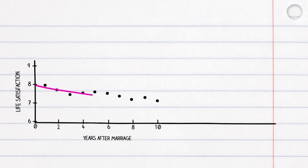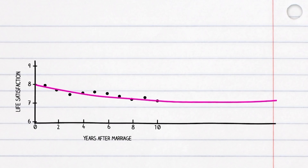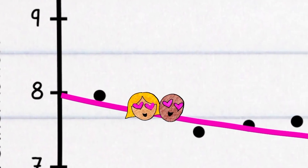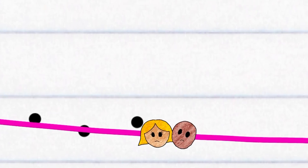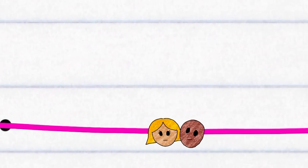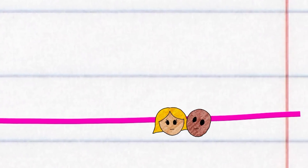This two-factor prediction passes through more data points, and the trend seems to align more with what psychologists say — that there's a slight comedown after the honeymoon bliss, but that life satisfaction more or less levels out over time. So if using two factors is more accurate than using one, adding more information should lead to a more accurate prediction, right?